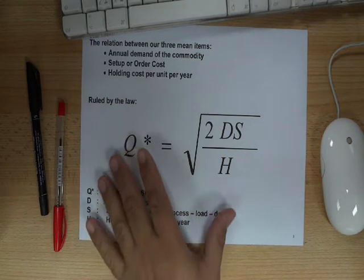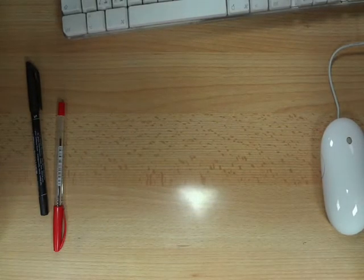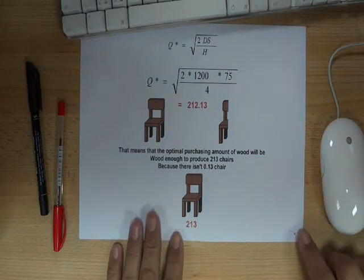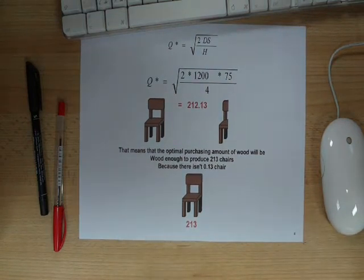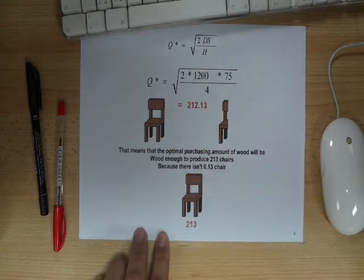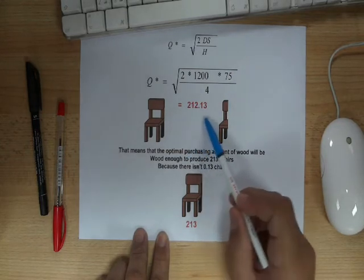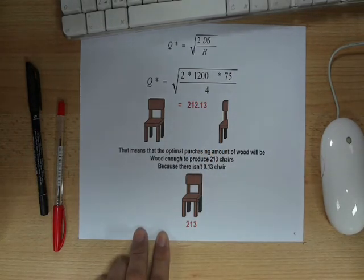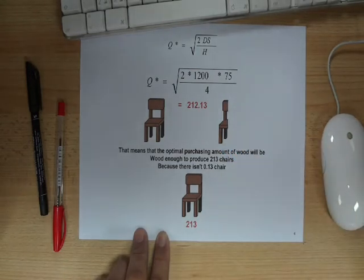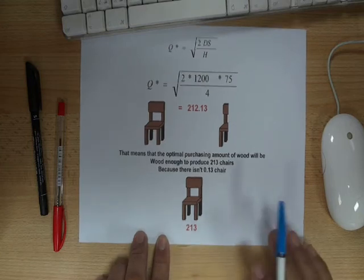After this simple calculation, the expert told the carpenter that the optimum amount of wood — the amount that allows him to exploit all the conditions around him for maximum benefit — is wood enough to produce 213 chairs. The calculation shows 212.13, but because there isn't 0.13 of a chair, the expert told the carpenter to purchase wood enough to produce 213 chairs.